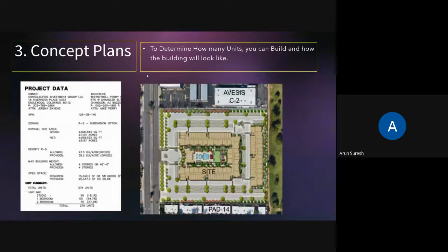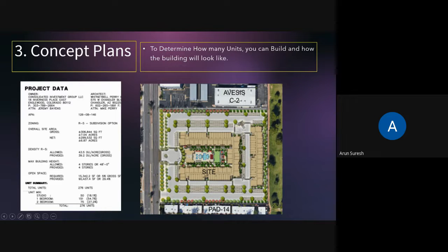Then we enter what is called the concept plan phase, which is a very important phase in development. You hire an architect who figures out how many apartments you can build on a particular site. They do a rough site plan showing how your building will look when laid out on that piece of land, and provide key metrics about zoning and unit counts. You verify all the information gathered previously through this concept plan — so it's important to do this before you make an offer or close on a land.